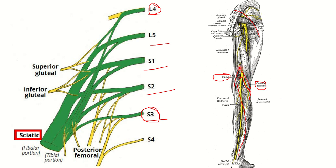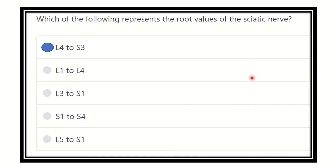So here is our final answer: the root value of the sciatic nerve is lumbar 4 to sacral 3 — that means lumbar 4, lumbar 5, sacral 1, sacral 2, and sacral 3. Thank you all.